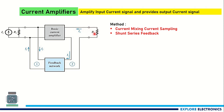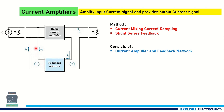The load resistor RL carries a current, and whatever current flows through RL is taken as the input to the feedback network — that is how we sample the current serially. We cannot sample current in parallel, because taking a signal in parallel across the load resistor gives a voltage quantity. The feedback output is again a current quantity, mixed with the source current Is at the input mixer in a shunt (parallel) manner. That is why we call this feedback topology shunt-series feedback.